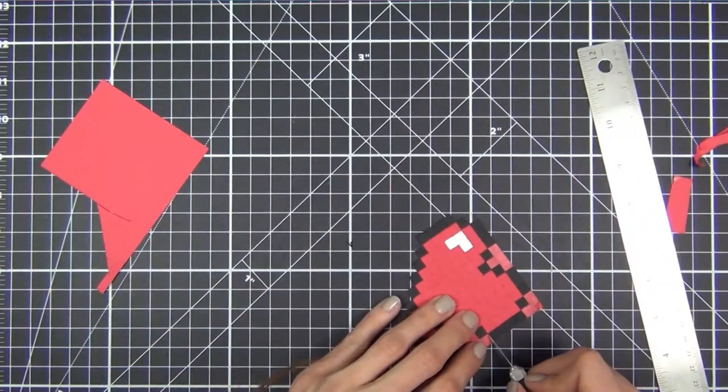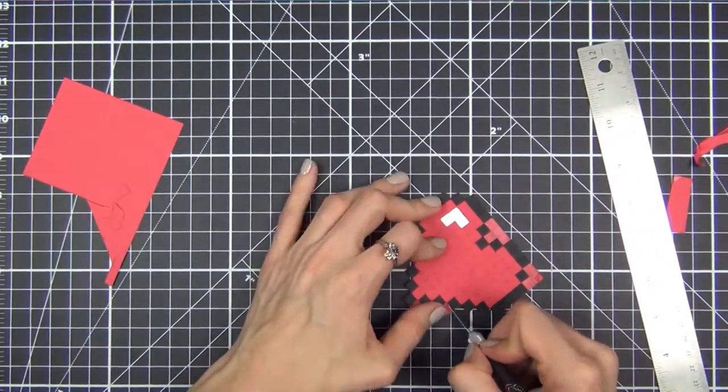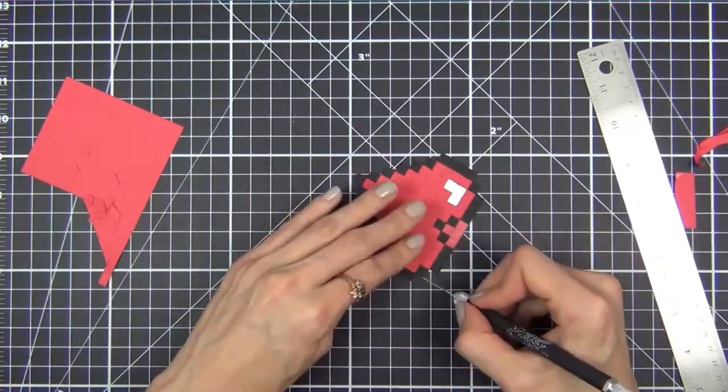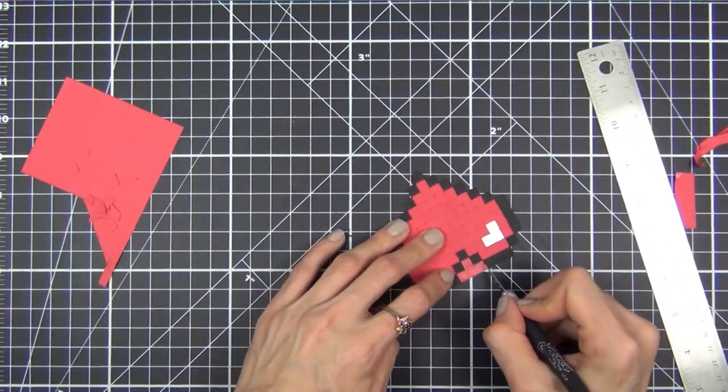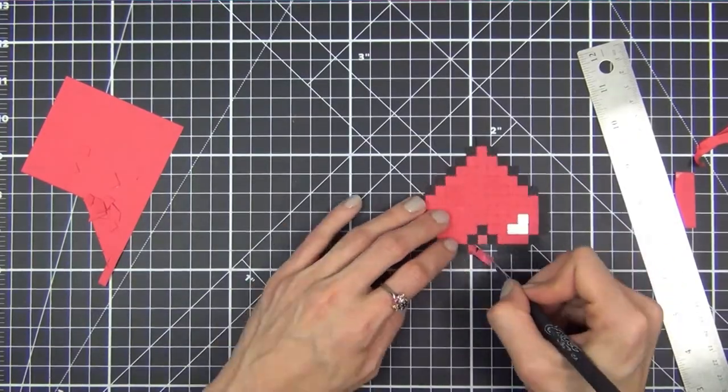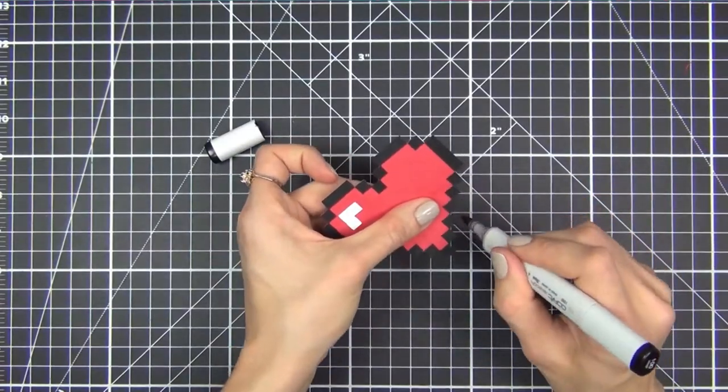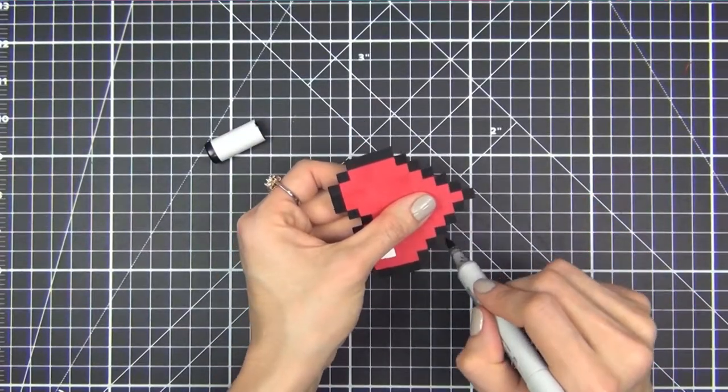Now I'm taking my craft knife and cutting out around the heart. You could try fine detail scissors, but this was the easiest way I found. Once it's all cut out, I take a black marker and go around the edges to kind of clean it up a bit and give it a nice finished look.